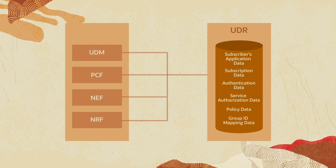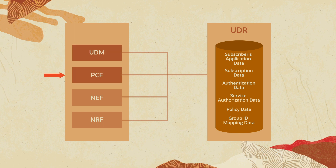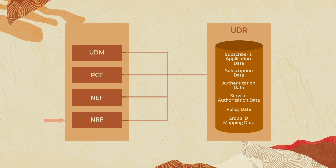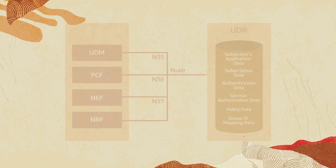Other NFs, like UDM, PCF, NEF, and NRF, interact with UDR via reference points.